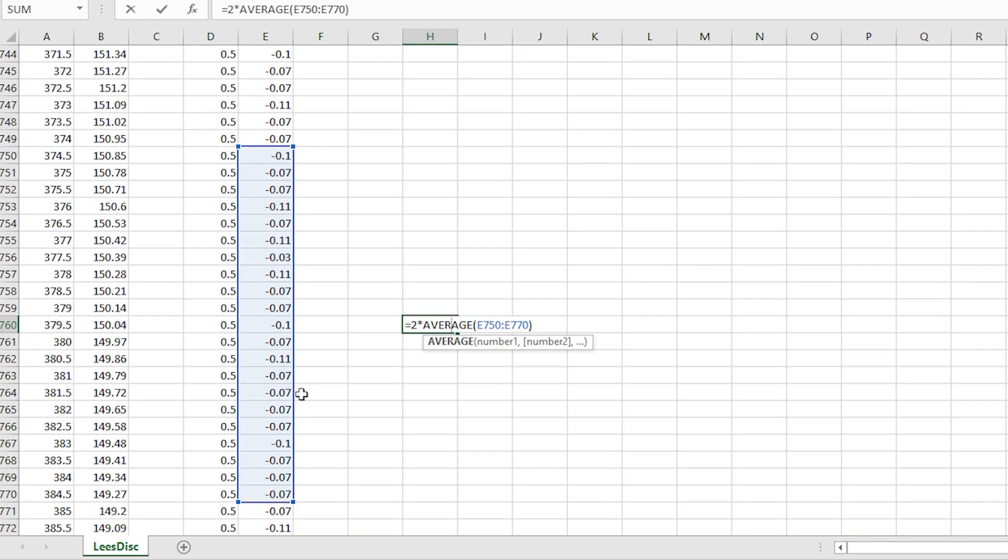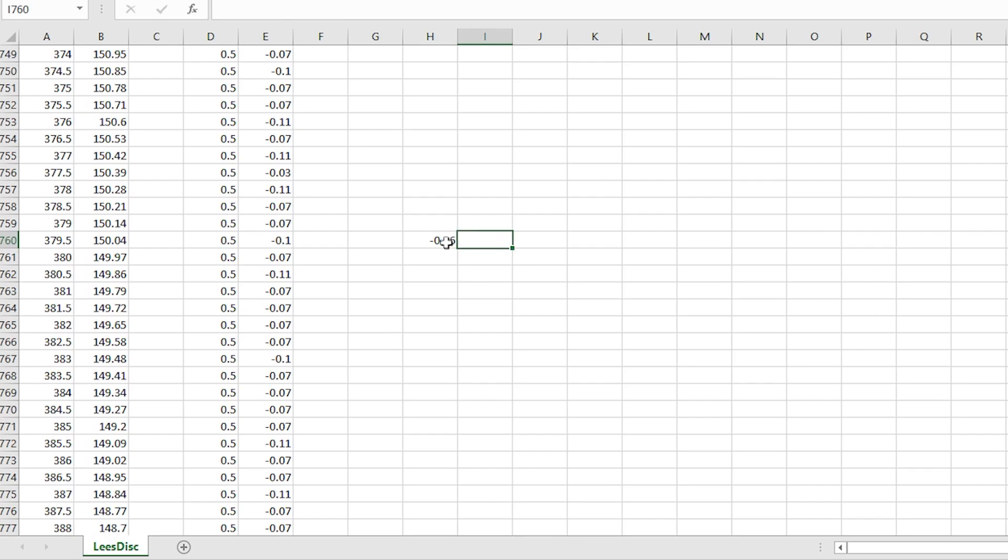To find the rate of cooling at a particular temperature, in this case 150 degrees Celsius, I'm going to take the average of the individual temperature drops per half second and multiply that by 2. This gives us an average of negative 0.16 degrees Celsius per second at around 150 degrees Celsius. Keep this number in mind. This will be useful for determining the coefficient of thermal conductivity at 150 degrees Celsius.